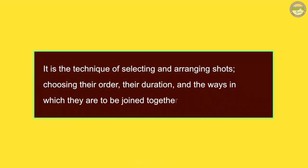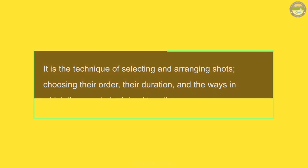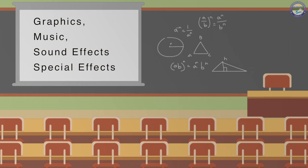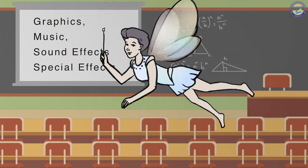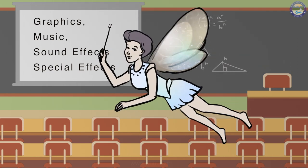Video editing is a technique of selecting and arranging shots, choosing their order, their duration, and the ways in which they are to be joined together. Editing is where graphics, music, sound effects, and special effects are added to the footage.